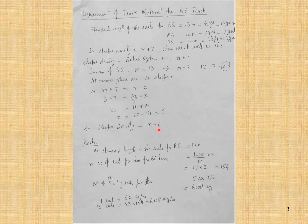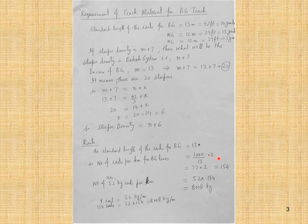The standard length of the rail for broad gauge is 13 meters. The number of rails per kilometer for broad gauge lines is 1000 divided by 13, multiplied by 2 — because we have two parallel rails. This gives 154 rails per kilometer.